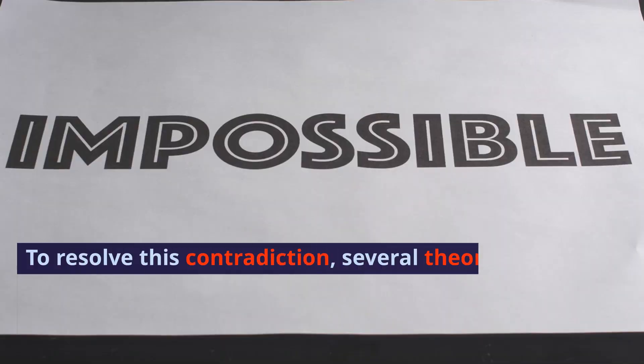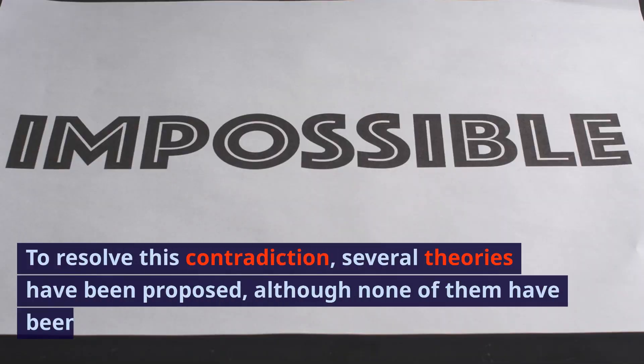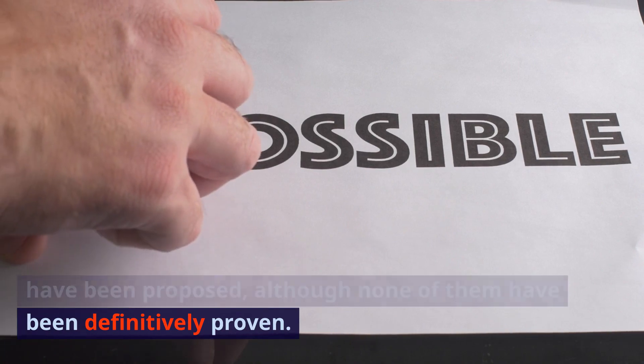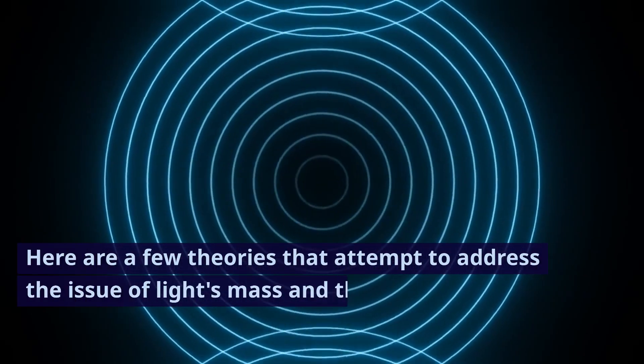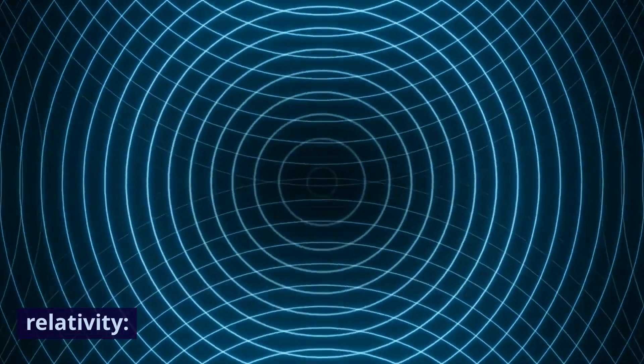To resolve this contradiction, several theories have been proposed, although none of them have been definitively proven. Here are a few theories that attempt to address the issue of light's mass and the theory of relativity.